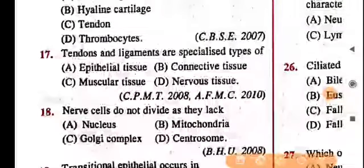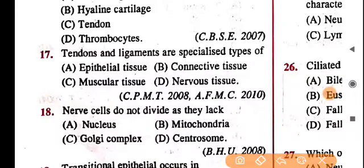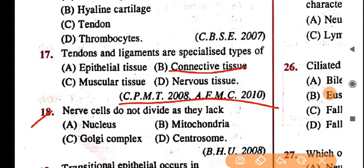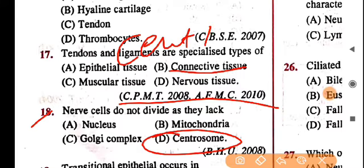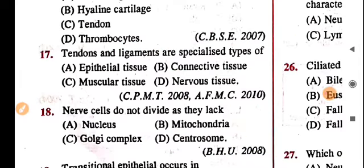Tendons and ligaments are specialized types of connective tissue. Next: nerve cells do not divide because they lack centrosome. Note this down — nerve cells do not possess centrosome. This was asked in Class 12 board examinations and is very important.